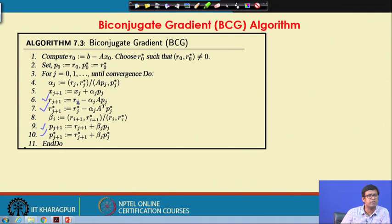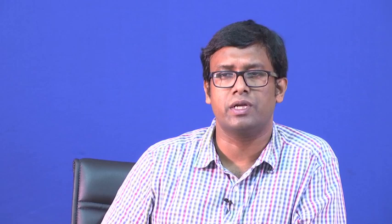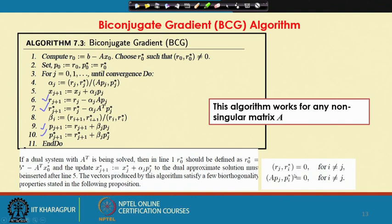The algorithm works for any non-singular matrix A. Convergence can be shown similar to the conjugate gradient type algorithm—these are first-order converging algorithms. The vectors produced satisfy biorthogonality properties: r_j · r_i* = 0 if i ≠ j, and A P_j · P_i* = 0 if i ≠ j. These recursive relations come from the biconjugacy and biorthogonality properties on which the method is developed.